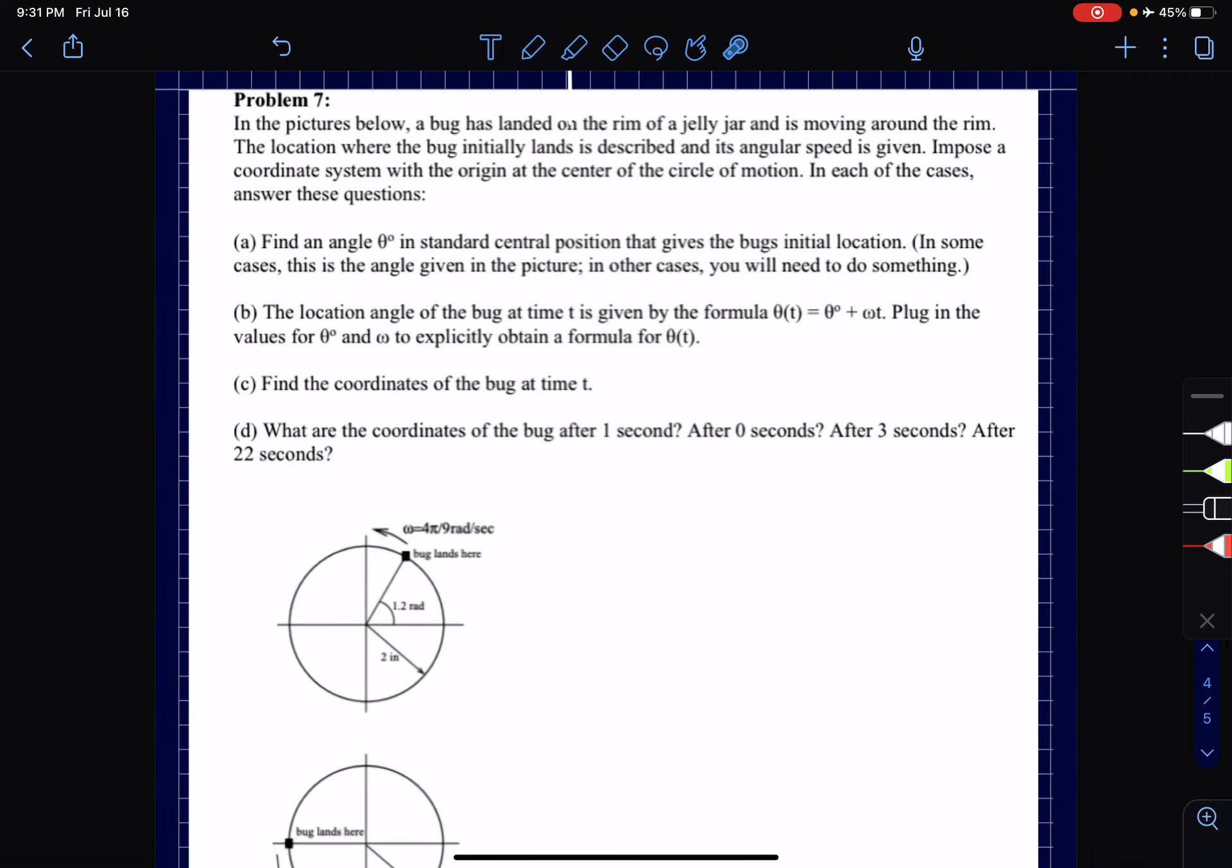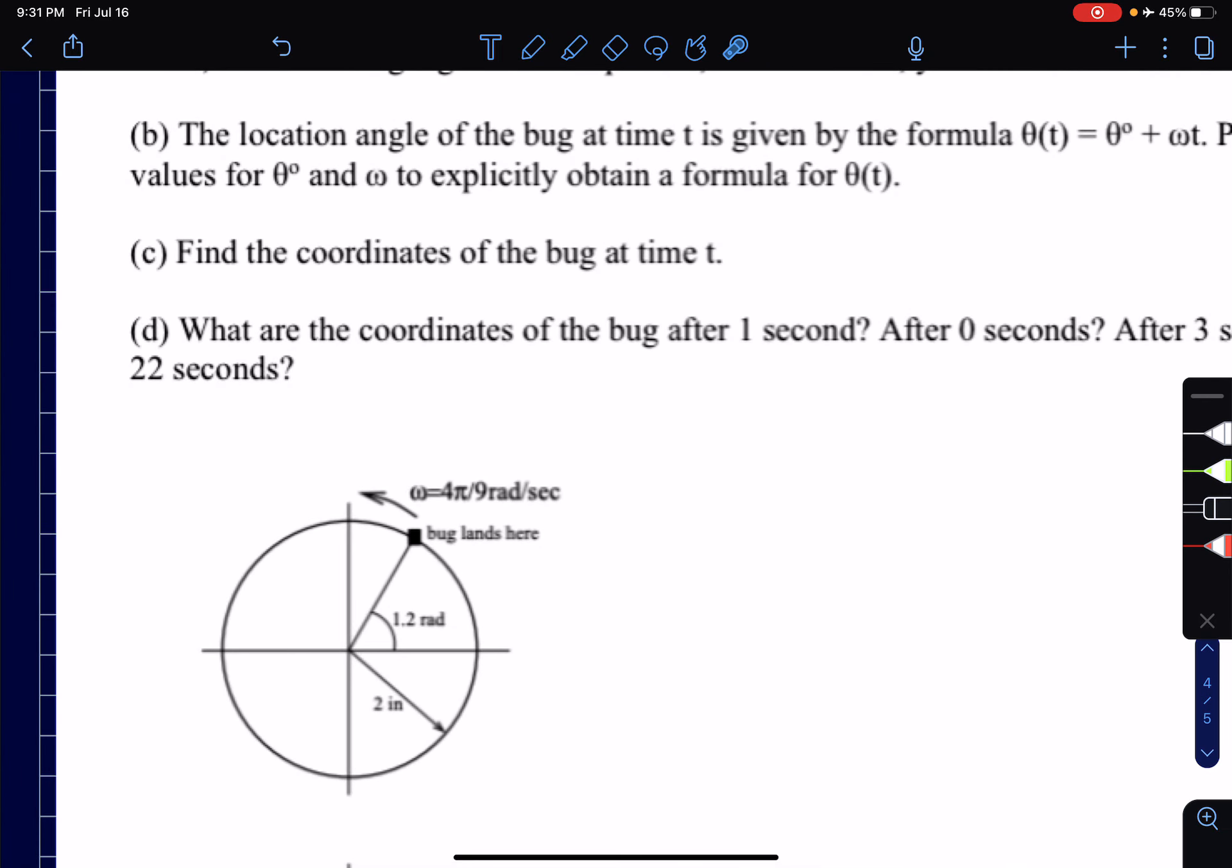For the first problem we have it starting at 1.2 radians with a radius of 2. Actually for all three problems it's going to have a radius of 2 and for all three problems it's going to have an angular speed of 4π over 9 radians per second.